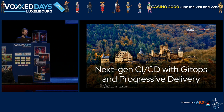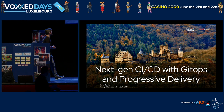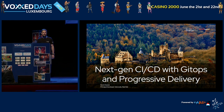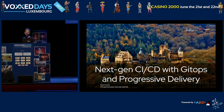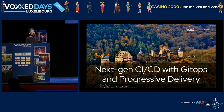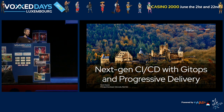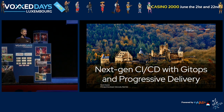Hello everyone, welcome to the session about — I call it — next-gen CI/CD with GitOps and progressive delivery. I'm Kevin Dubois, and I'm a developer advocate at Red Hat. I also speak a little French, but we'll do the session in English.